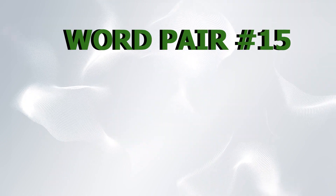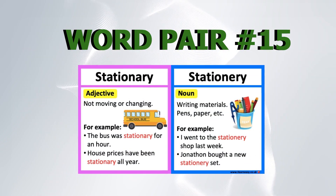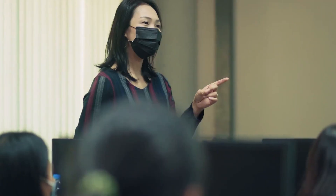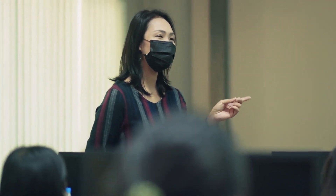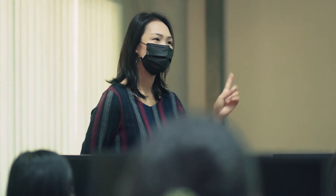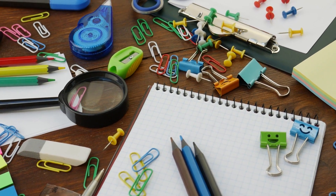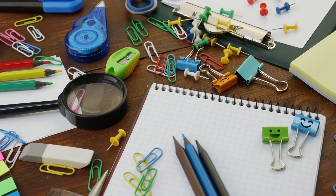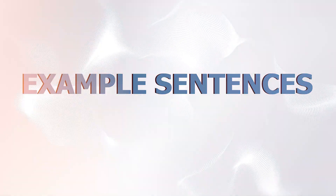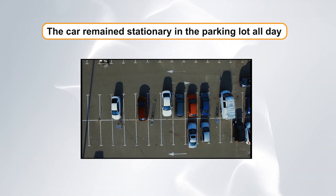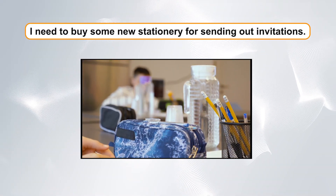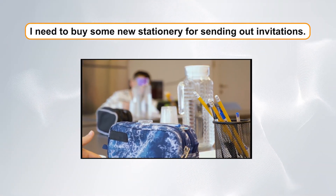Word pair number fifteen: stationary versus stationery. Our final confusing word pair is stationary and stationery. Stationary means not moving or unchanging, while stationery refers to writing materials such as paper and envelopes. Example sentences: One, the car remained stationary in the parking lot all day. Two, I need to buy some new stationery for sending out invitations.